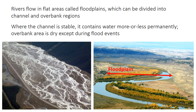In rivers where the channel is stable and fairly permanent, like the right-hand photo, the remaining area of the floodplain is called the overbank area — that's the flat area with trees and grass. The river on the left doesn't have a clear separation between channel and overbank, because the multiple channels are constantly shifting position. These two photos illustrate the two main categories of rivers: braided rivers on the left and meandering rivers on the right, which we'll discuss further.